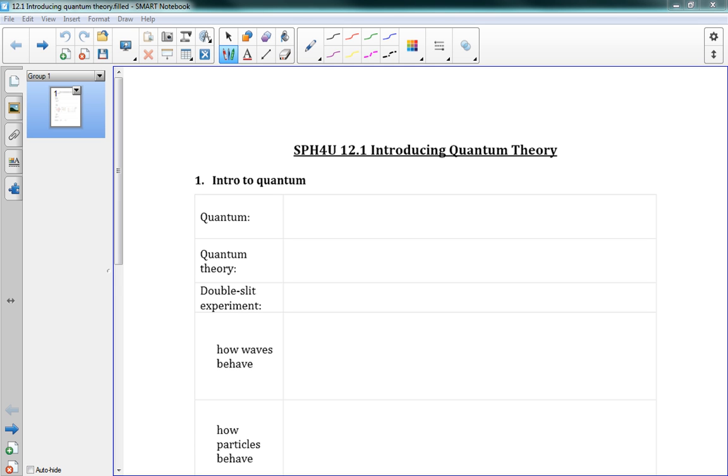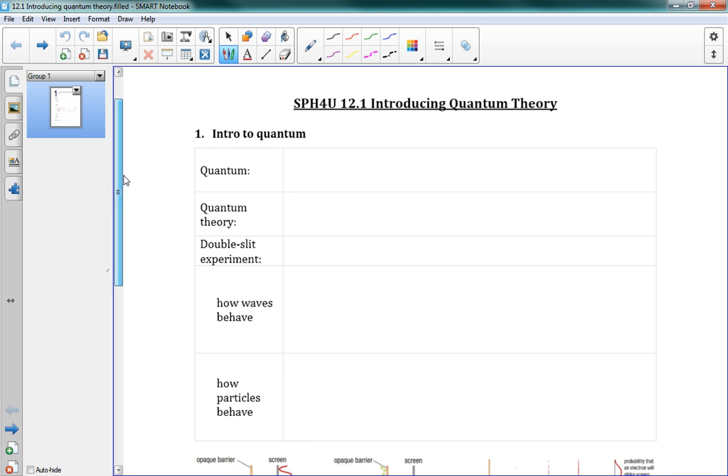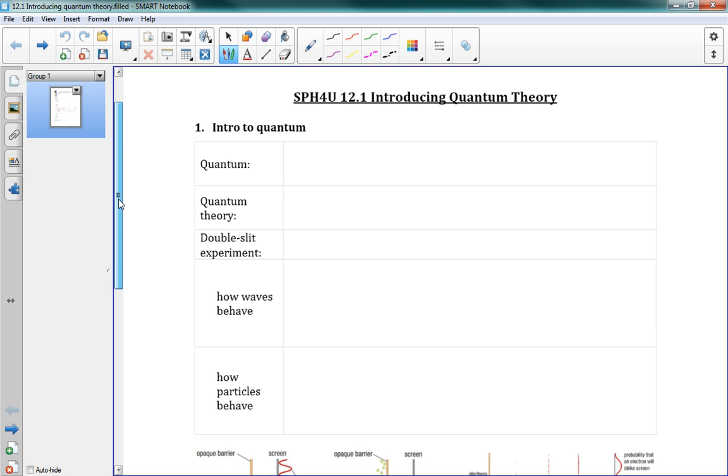Okay, here's 12.1, introducing quantum theory. So this is the beginning of chapter 12. We're done with relativity. We're on to quantum, which is the other big modern physics theory that we need to learn about.